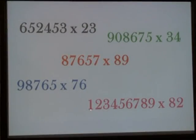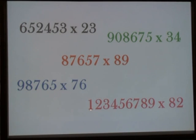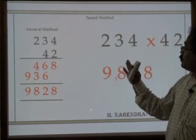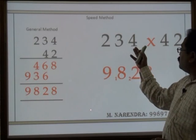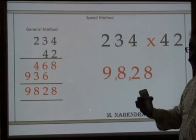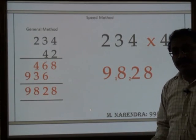In this video we will learn how to multiply any number by any two-digit number in a faster way. For example, how do we multiply 234 by 42 in a faster way?